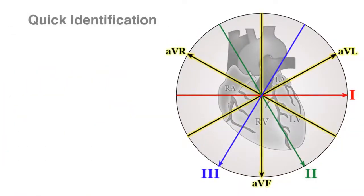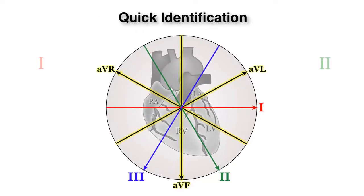Finally, there are also a few tricks to quickly identify the direction of the mean axis. In order to do this, simply look at the mean amplitude of the QRS complexes of leads one and two.